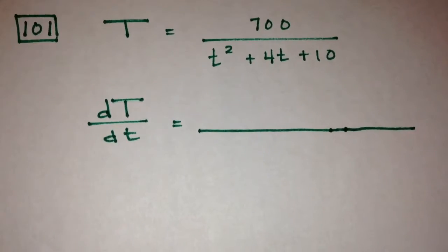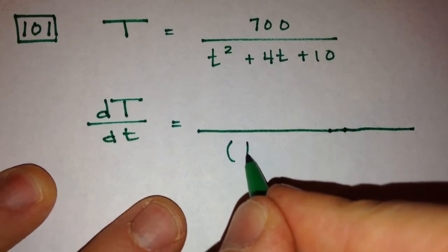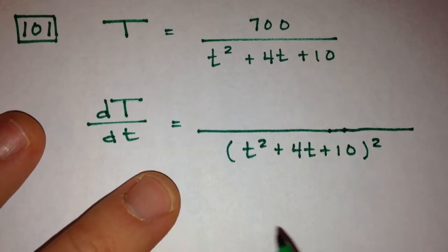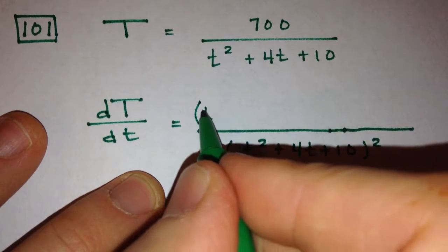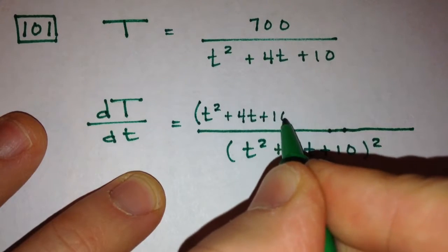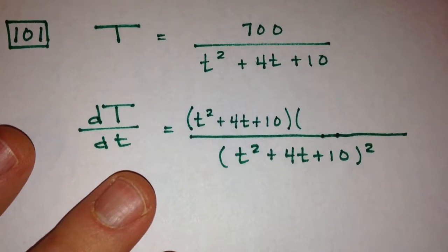And I'm going to do this as a quotient rule, which means we take the denominator function and we square it. And then we bring the denominator up and we multiply that by the derivative of the numerator.